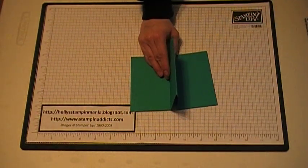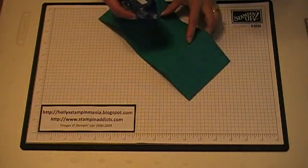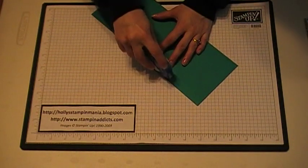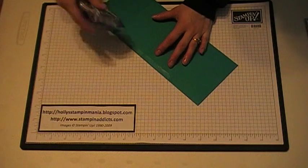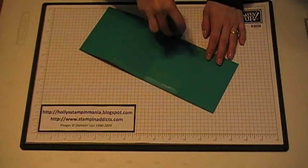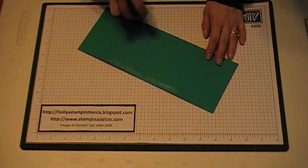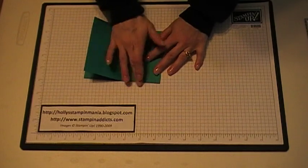Then the next thing you're going to do is take some snail adhesive, and you want to do just along the edges, because you've got to be able to slide your gift card in, so you're just doing the two inside parts, and then fold it over and press down firmly.